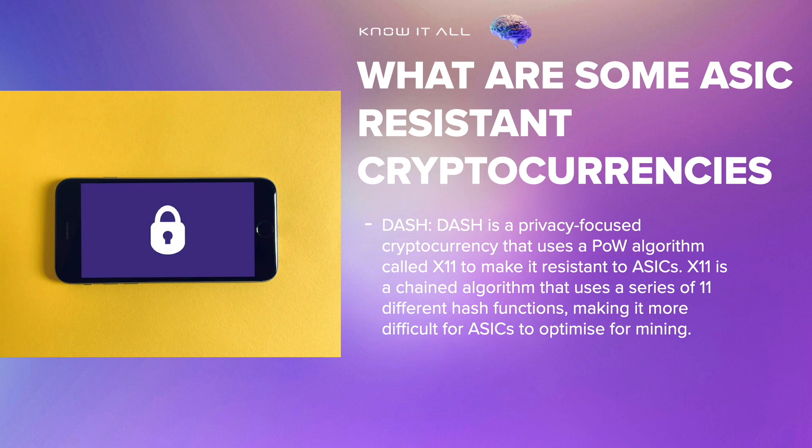Dash is a privacy-focused cryptocurrency that uses a POW algorithm called X11 to make it resistant to ASICs. X11 is a chained algorithm that uses a series of 11 different hash functions, making it more difficult for ASICs to optimize for mining.